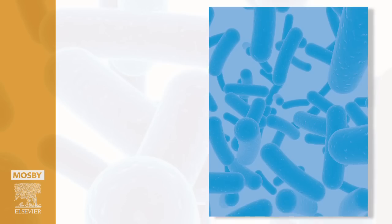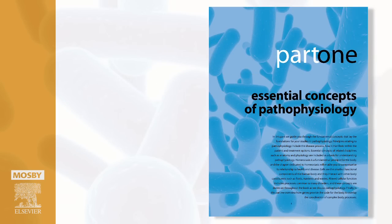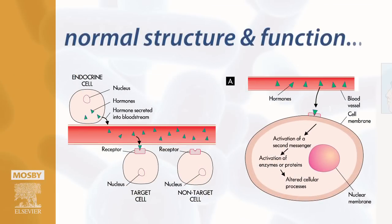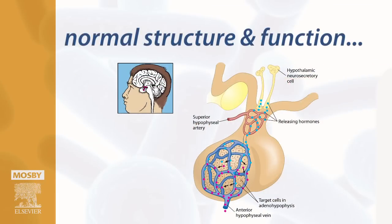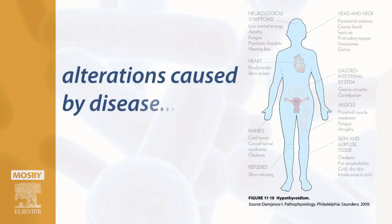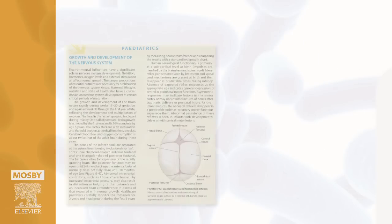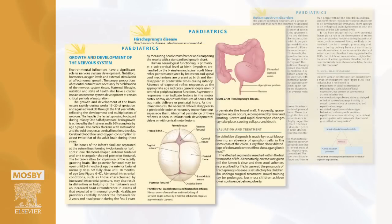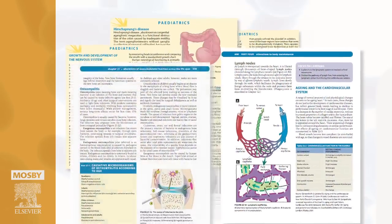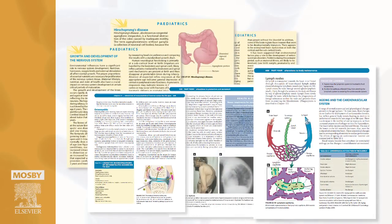Starting with the essential concepts, the text builds to examine the normal structure and function of each body system, followed by the alterations to that system caused by disease. Conditions particularly relevant to children and the elderly are grouped together to demonstrate disease processes across the lifespan.